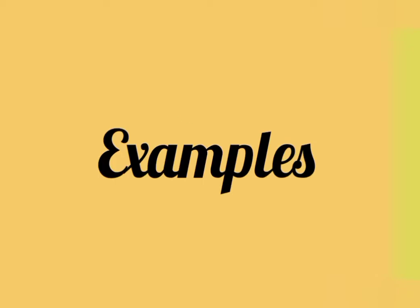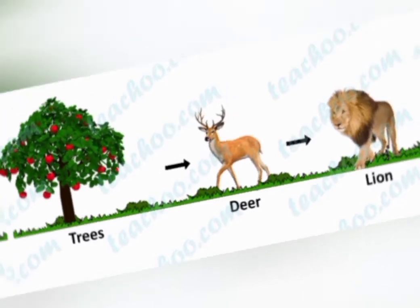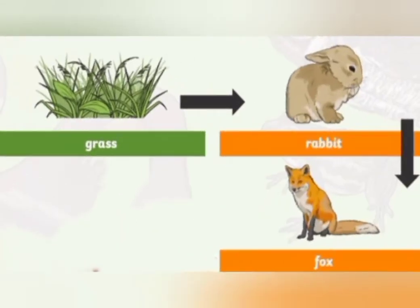In the picture we can see a tree. The tree is a producer — it produces food through its leaves or fruit. These are eaten by a deer, which is a primary consumer. The deer is hunted by a lion, so lion is a secondary consumer.